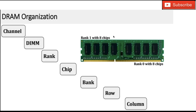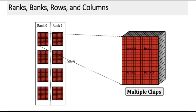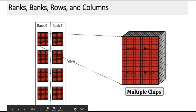This DIMM is connected to a memory controller via a channel. Inside a DIMM there are ranks — there are two ranks, one rank on each side of the DIMM. When you look into a rank you will see there are eight chips. A rank is further divided into chips, and when you zoom into a chip you will find it is divided into banks, and inside a bank you will find rows and columns.